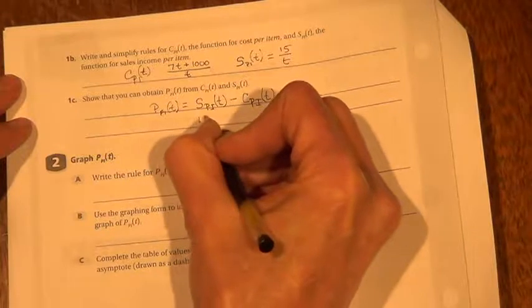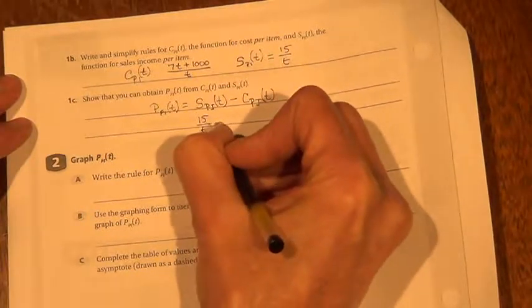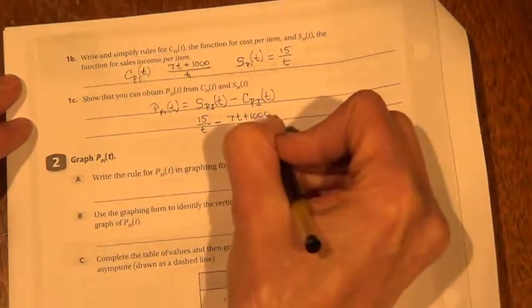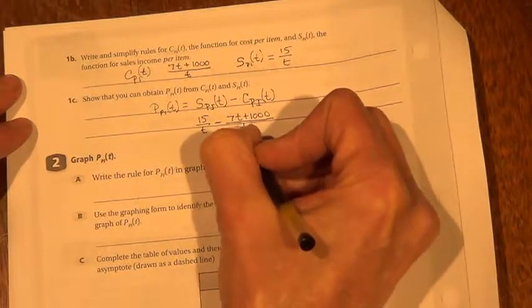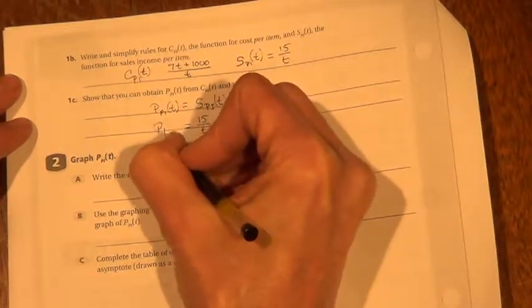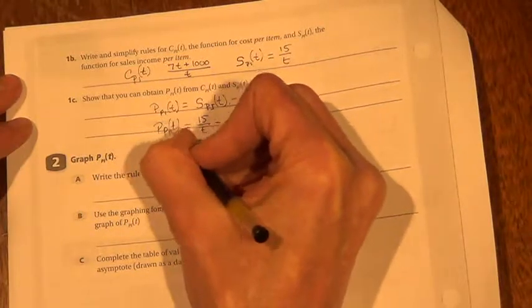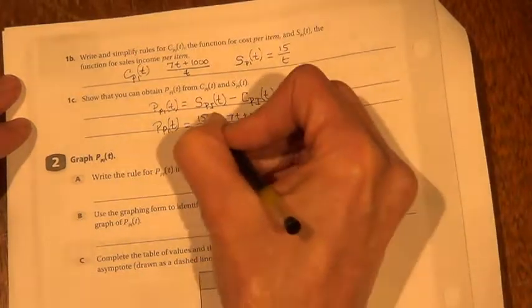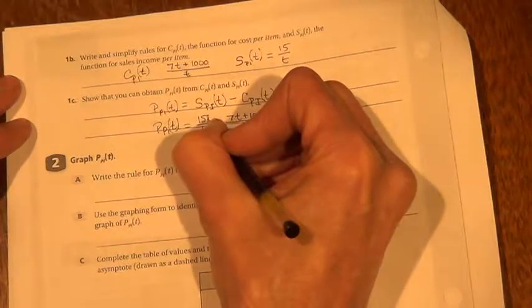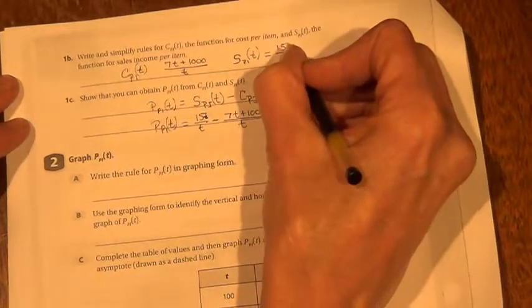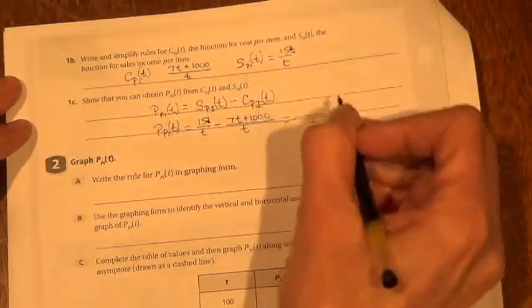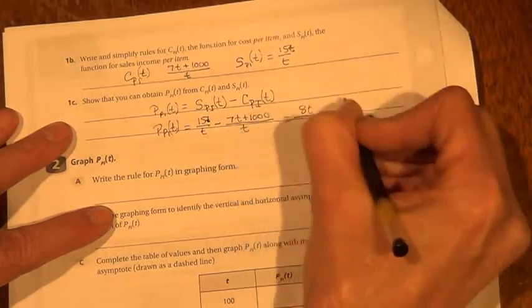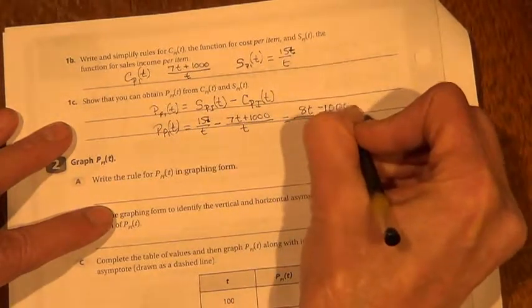Now it says, show how you can obtain the profit per item from the cost and the sales. So again, we have the profit being equal to the sales per item, just like they said on the front, minus the cost per item. So we would have 15t minus 7t plus 1,000 per t. 15t minus 7t would be 8t, and a negative 1,000.